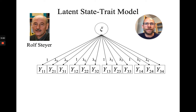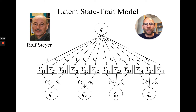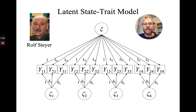In addition, in the latent state trait model, we also have time-specific variables. Those time-specific variables are called latent state residuals, zeta. Those variables reflect within-person variability. They can be seen as representing situation effects and person-by-situation interactions — everything that's not reflected by the trait, but is systematic variance remaining after partialing out the trait, represented by the zeta state residual variables.